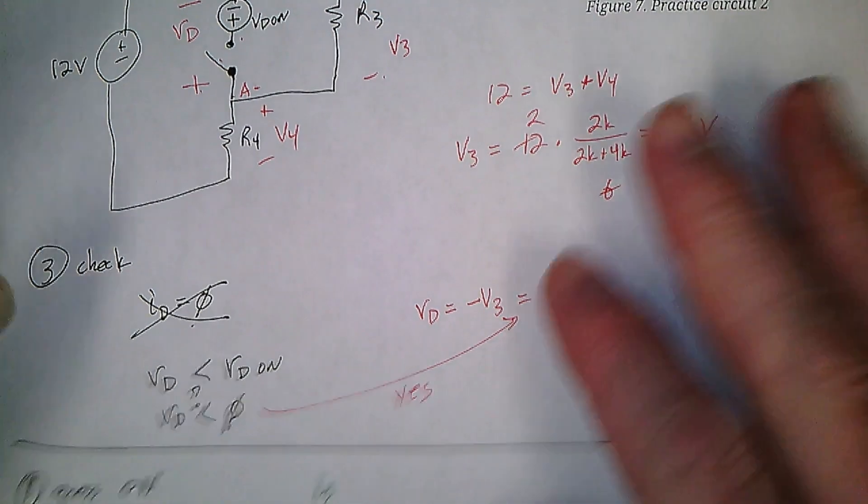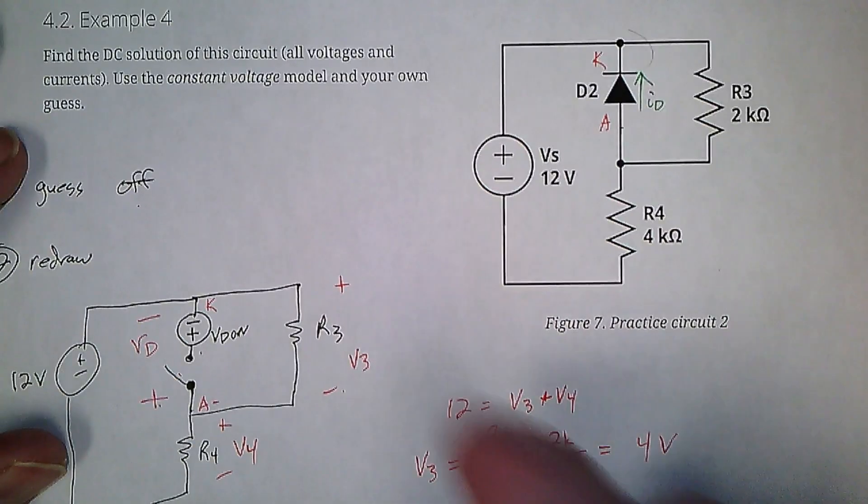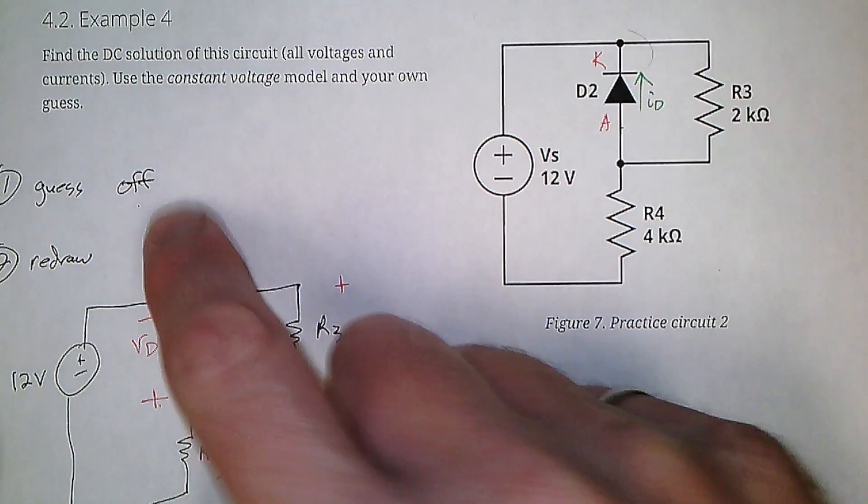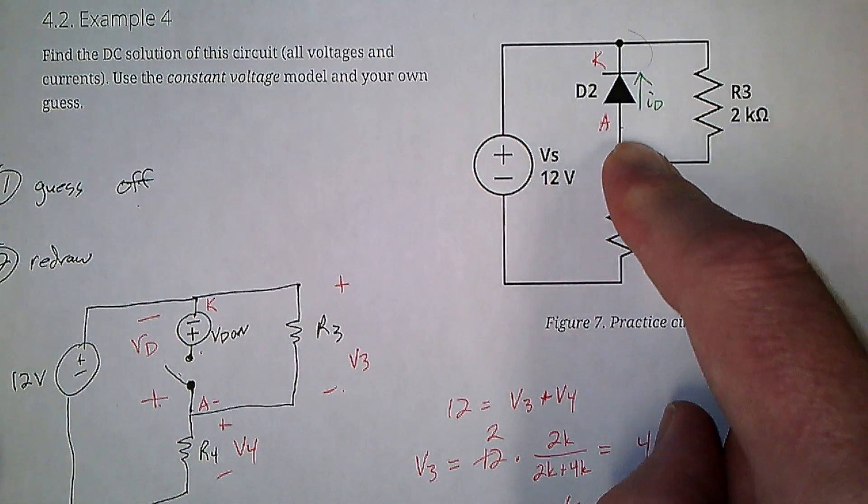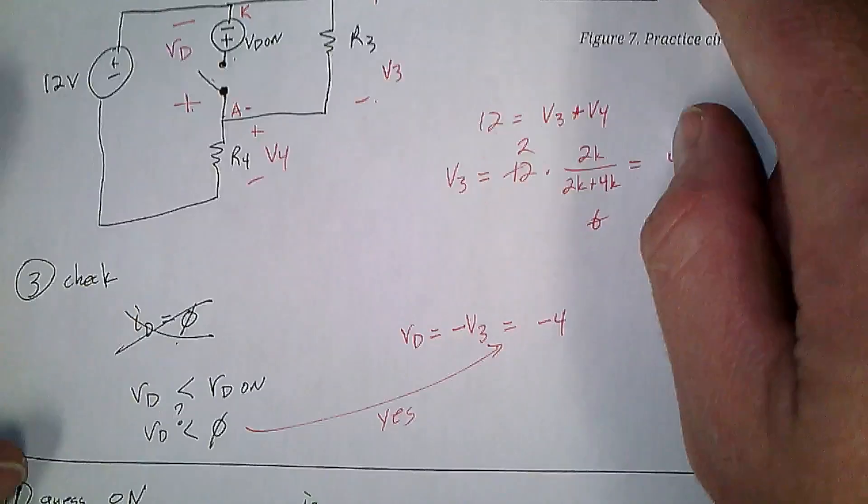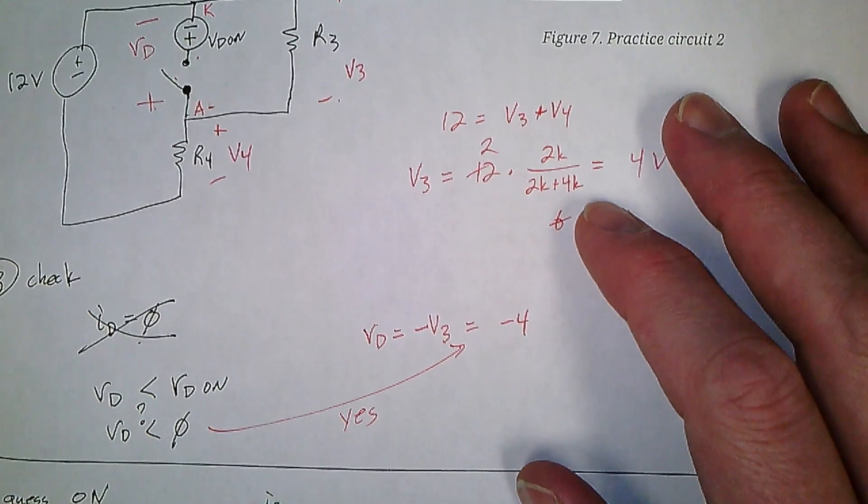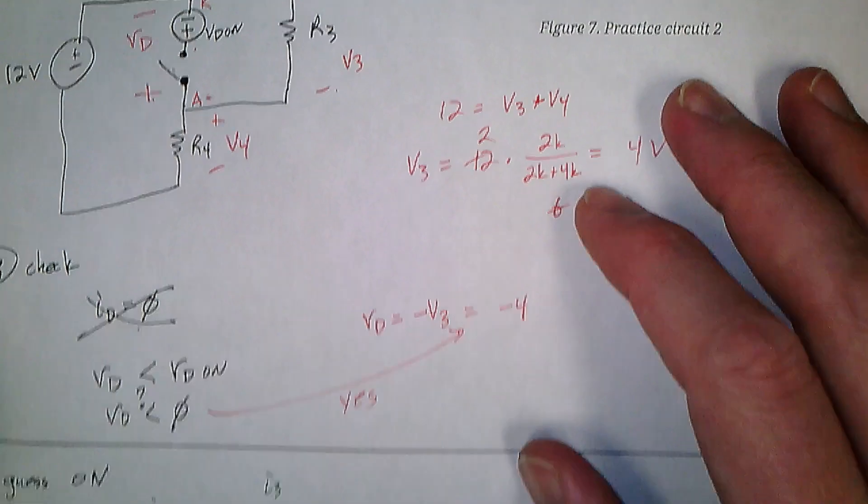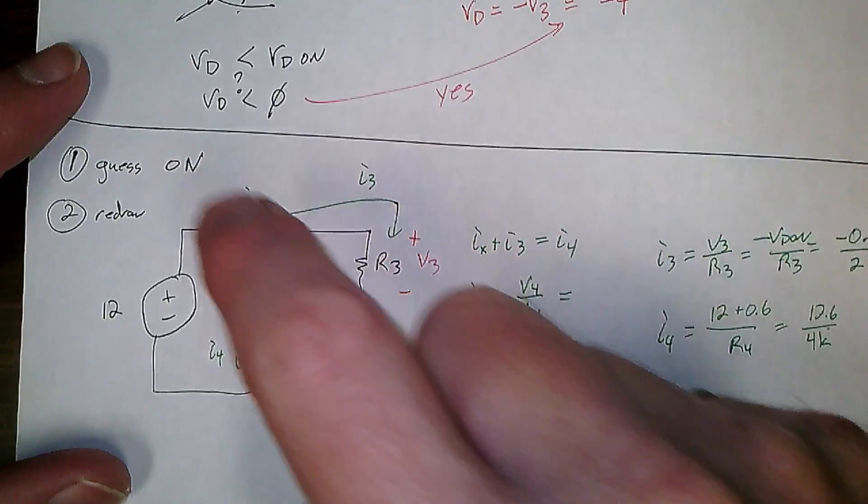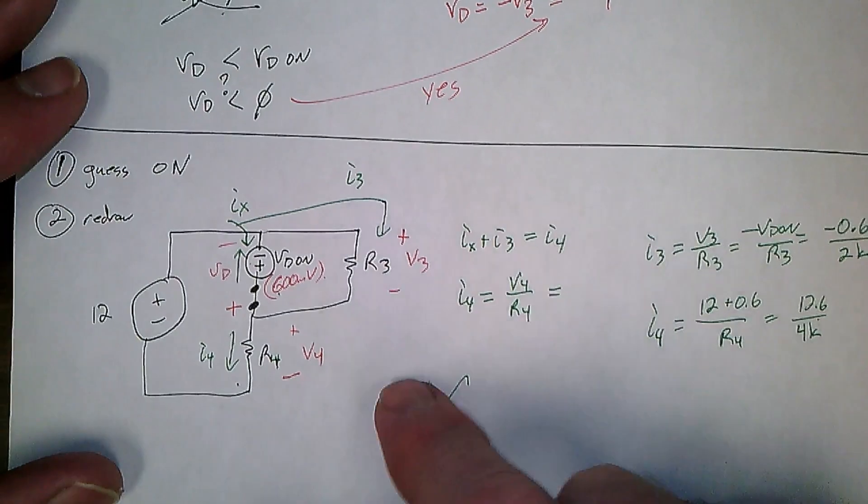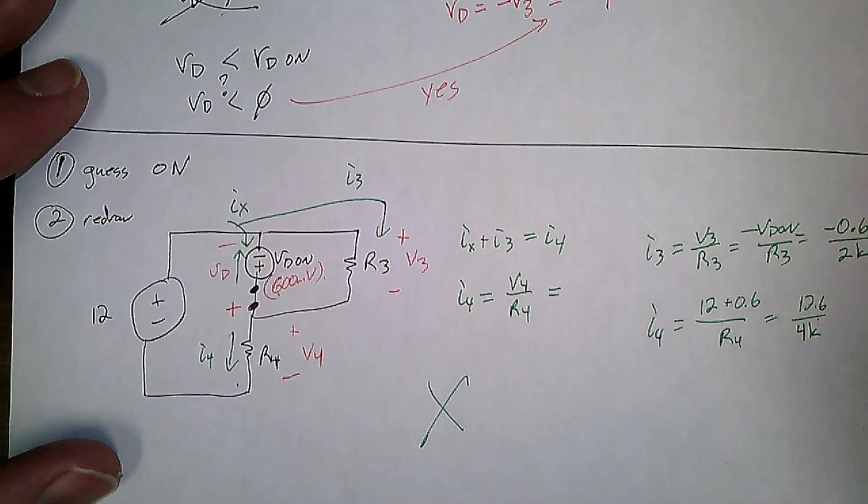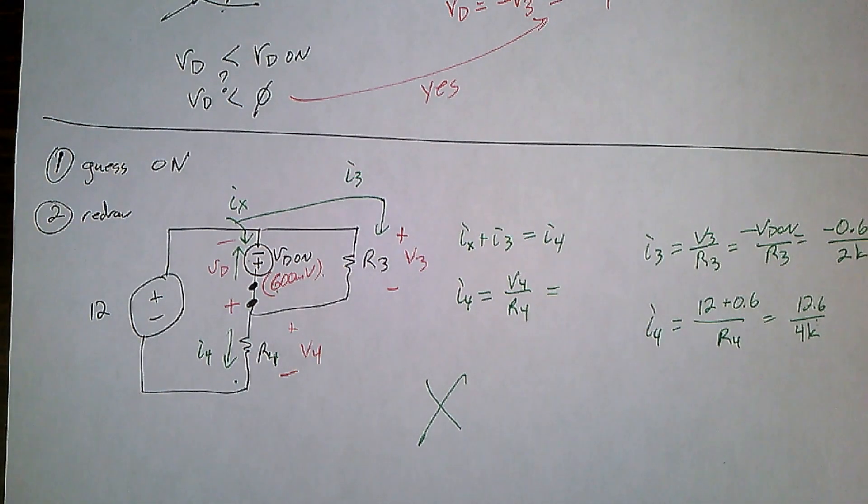This is how most diode circuits are going to work out. You make a guess. Almost all of the time, you guess correctly. And you solve it. Your check works out okay. Don't get lulled into not checking. Because you will guess incorrectly on occasion. If you don't check, you might have a nice answer, but it won't match reality.